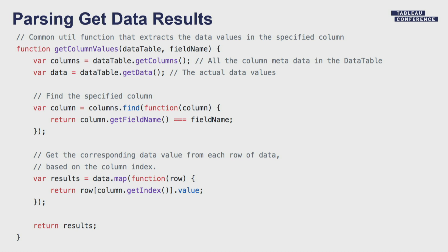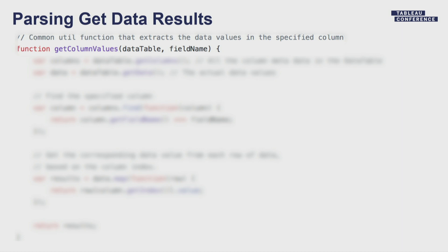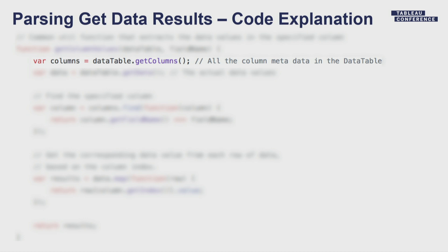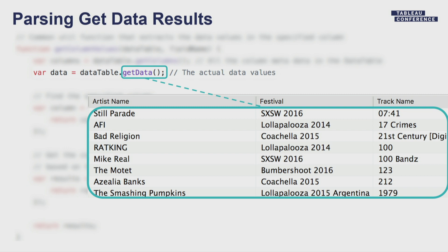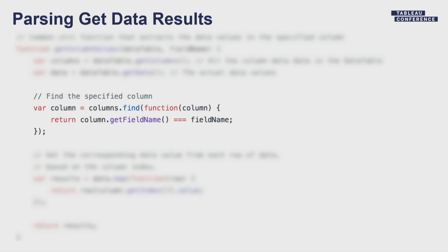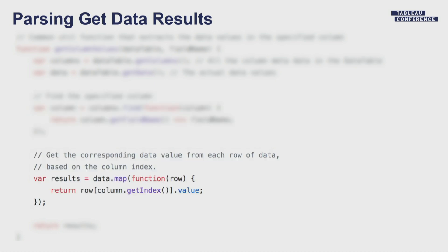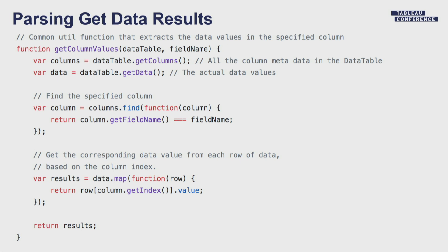How do you actually parse the results of the API call? Here's a generic function called getColumnValues. It takes in a data table object from the API and returns the list of column values for the field name you specified. Two important functions: first is getColumns, which returns all the metadata associated with the data table. Second is getData, which gets back the data in a row-based matrix format. We find the column we specified, get its index in the matrix, then iterate through each row and use the column index to find the data. This is only about 10–15 lines of code, but it's a very powerful function that allows for a lot of different scenarios — for example, building your own custom filtering and searching functionality.